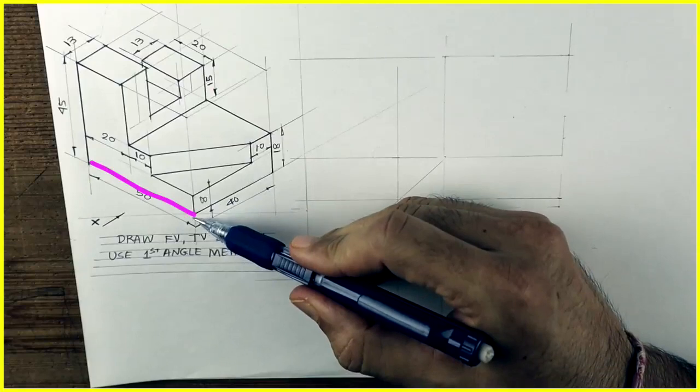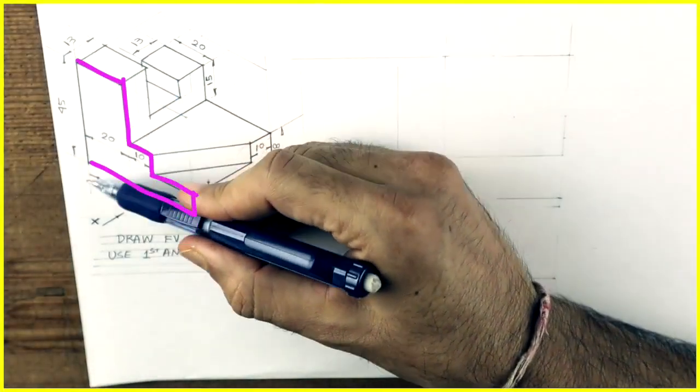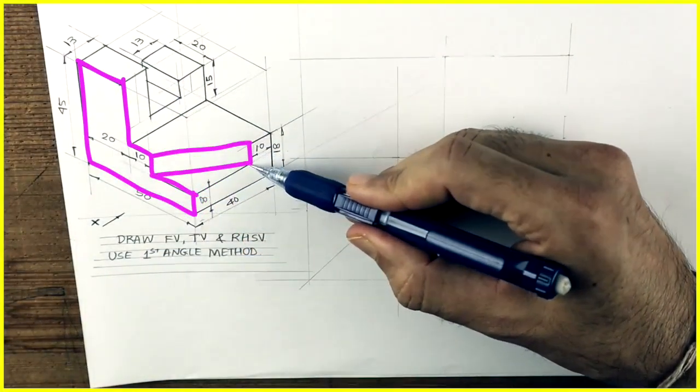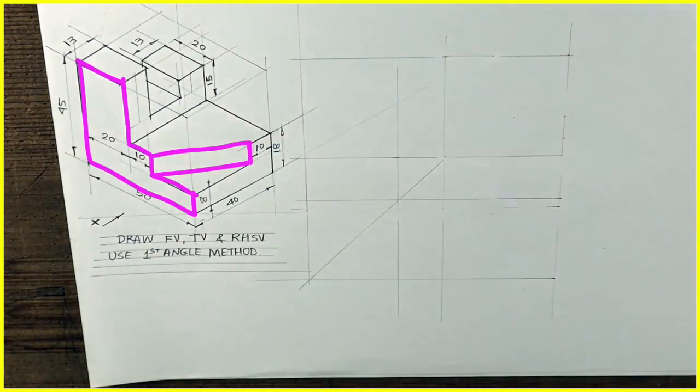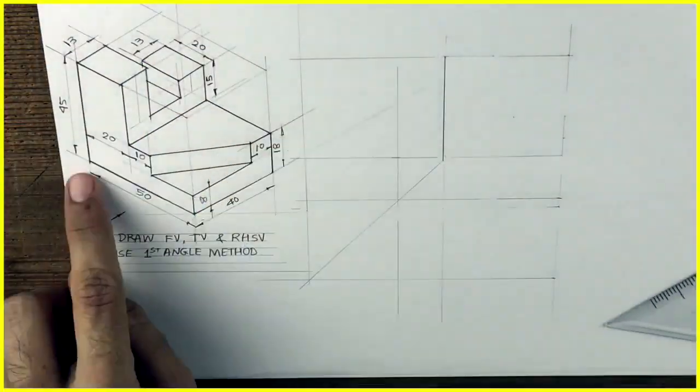In front view you will see this part. We are drawing orthographic which is a very important topic in technical drawing and engineering drawing. See this rectangle, and this part we can't see that is dotted. That way we will draw.